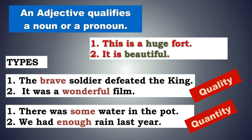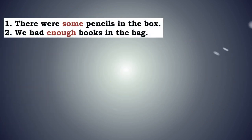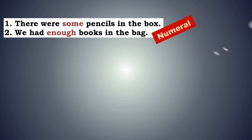Now let's look at the next type. There were some pencils in the box. We had enough books in the bag. The nouns are different here — pencils and books are countable nouns: one pencil, two pencils. When the same adjectives some and enough are used with countable nouns, they become numeral adjectives. They answer the question how many, not how much.